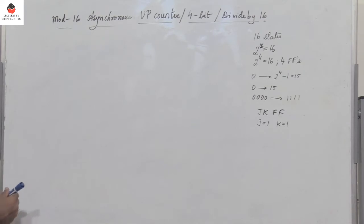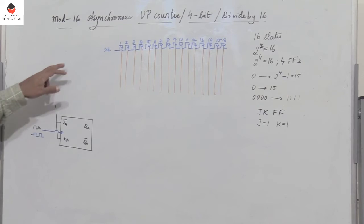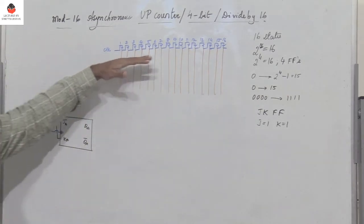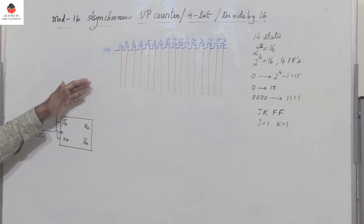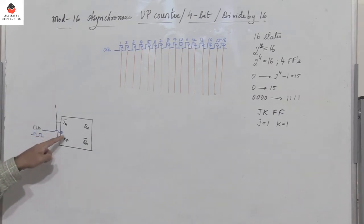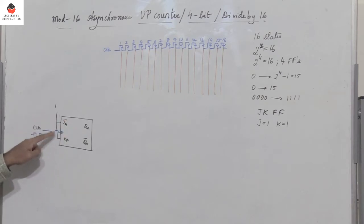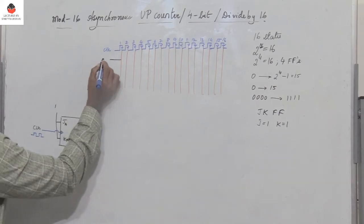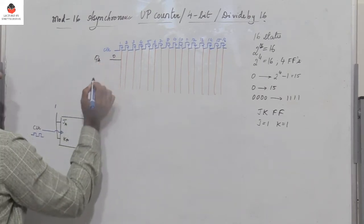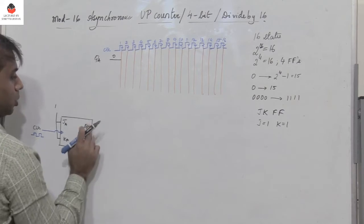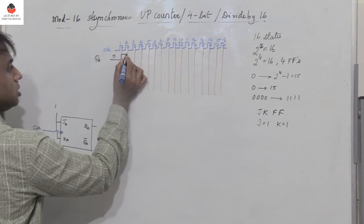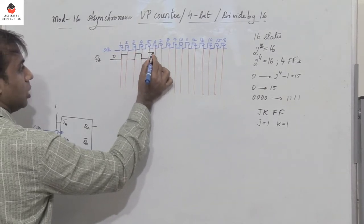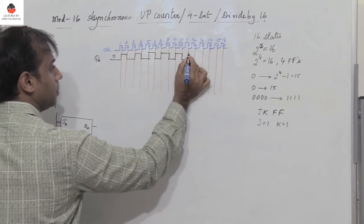To draw the circuit diagram, we first draw the waveforms. For a mod 16 counter, we need 16 clock pulses. The clock is given to the first flip-flop A, with both J and K inputs tied to 1. Assuming all flip-flops are initially reset to 0, QA starts at 0. During the negative edge of the first clock pulse, QA toggles from 0 to 1, then from 1 to 0 on the second, and so on.